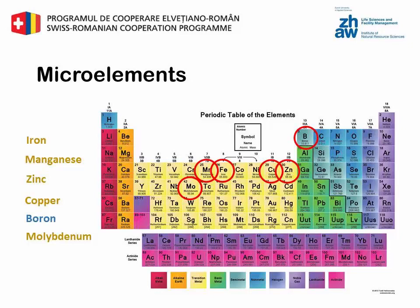Too high concentrations of these elements are often toxic. Iron plays an important role in metabolic functions that involve redox reactions. It is present in the cytochromes, in the ferredoxin and reductase. It intervenes in breathing, in the synthesis of chlorophyll, in the synthesis of proteins and in fixing nitrogen in the nitrate reduction.